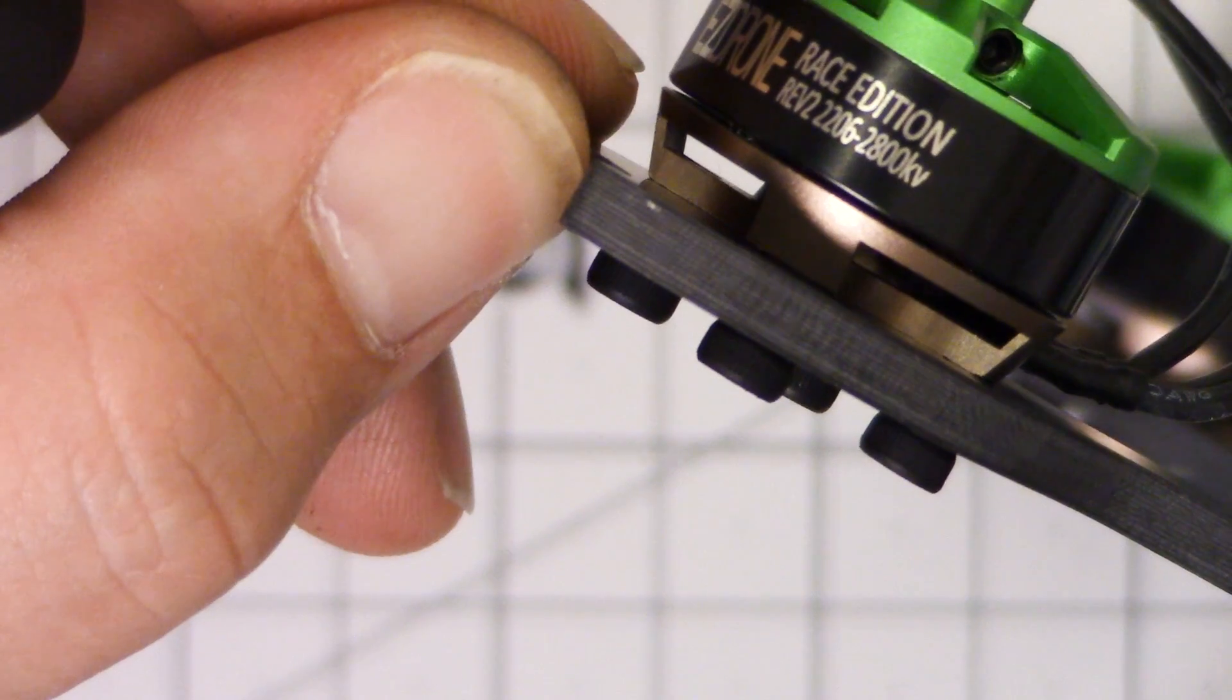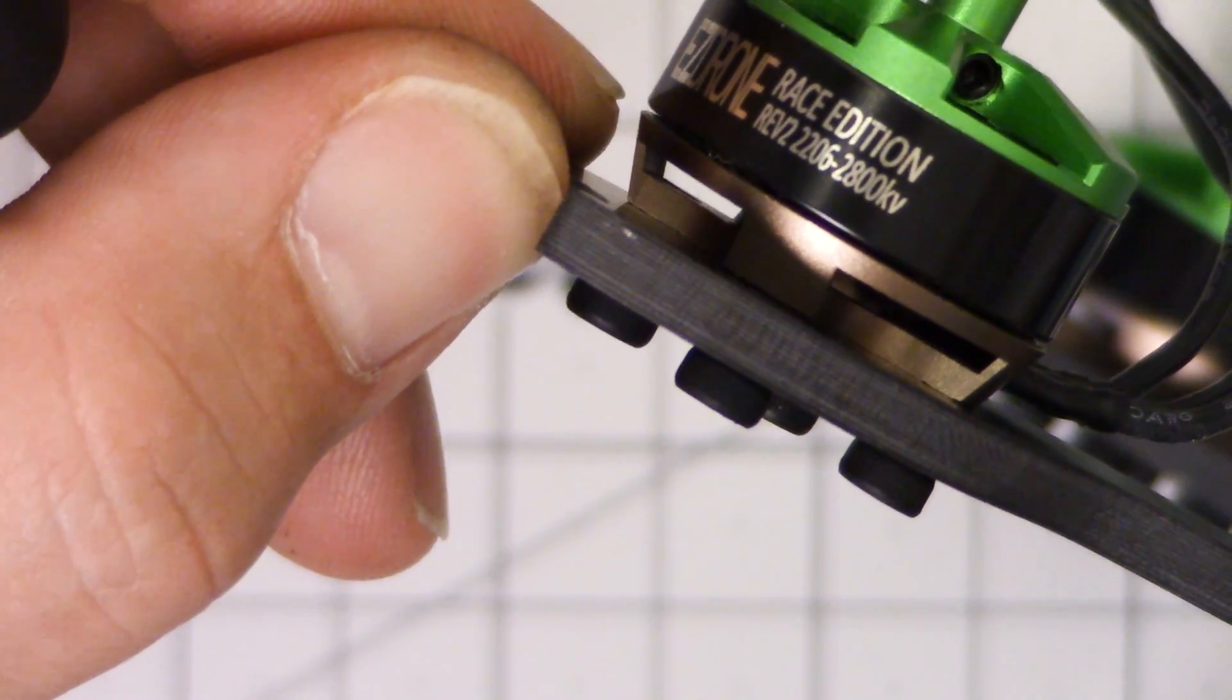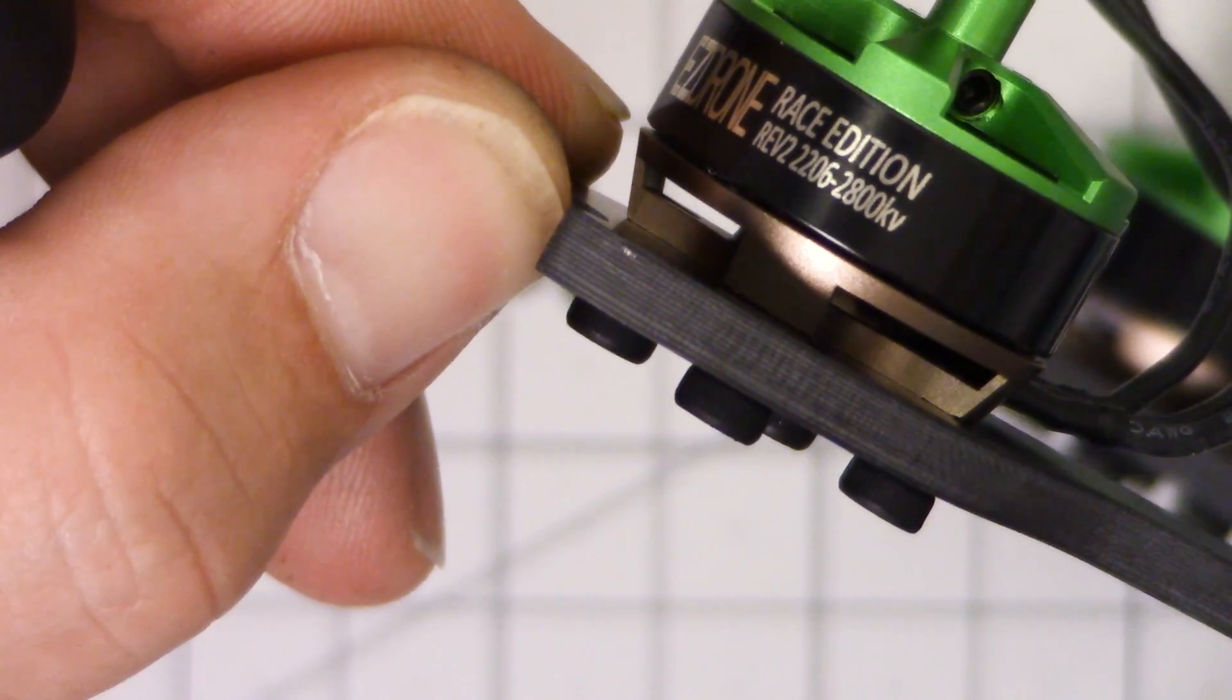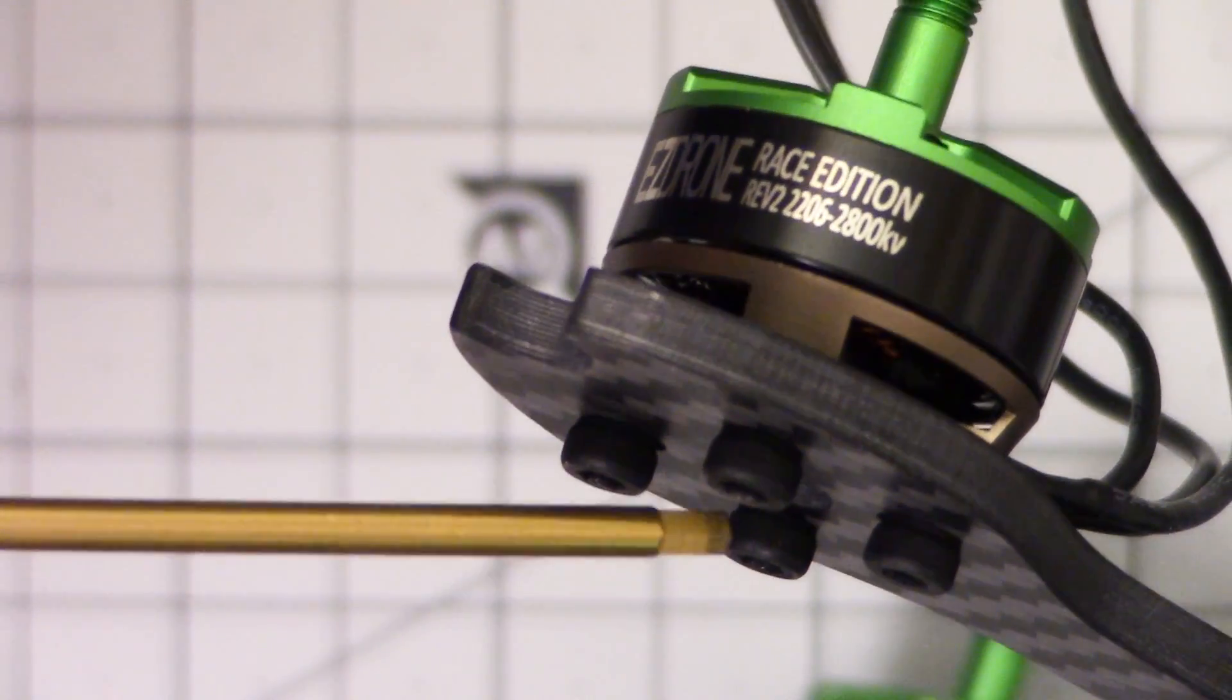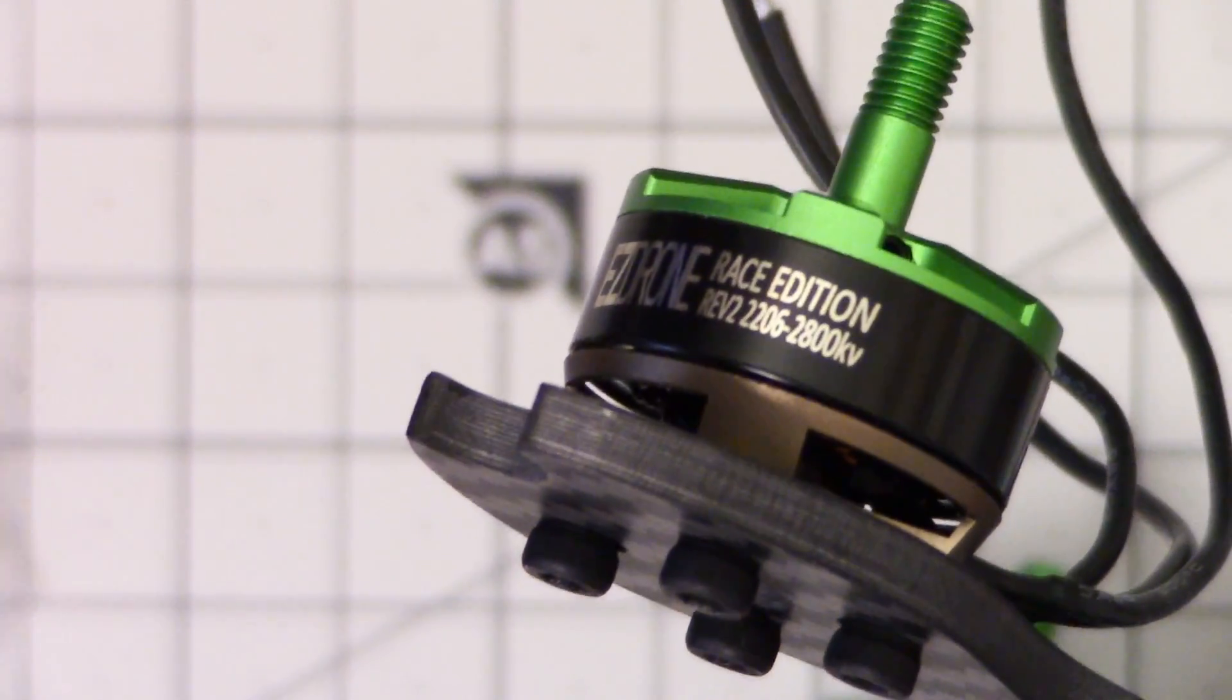So those screws are just long enough that they almost get all the way through the motor base. It might feel a little bit better if they protruded just a little bit above, and certainly if I was going to use any kind of washer or anything like that under here I would use a longer screw.